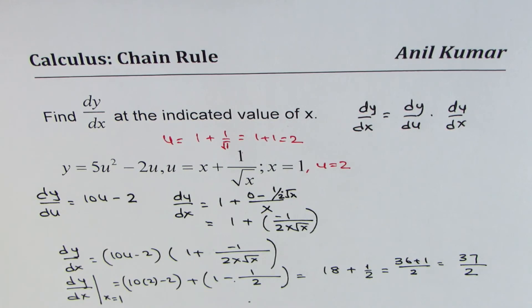So 37 over 2 is the derivative of the function with respect to x at x equals 1. I hope the steps are absolutely clear. Thank you and all the best.